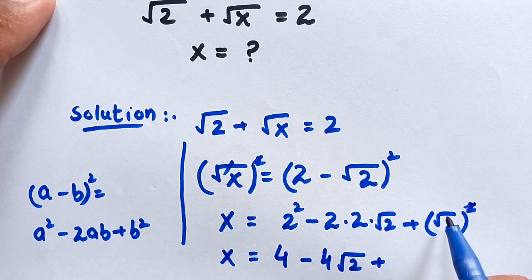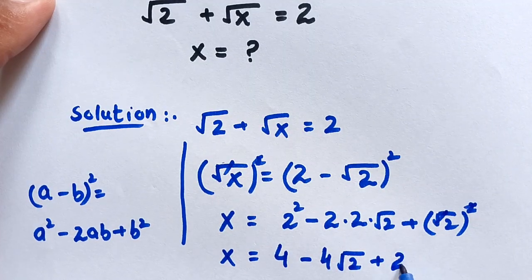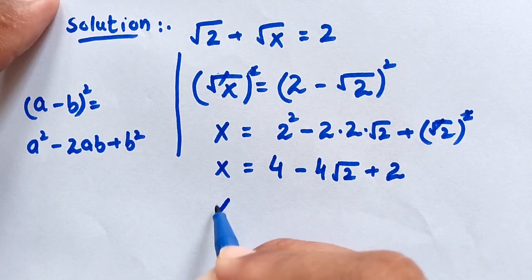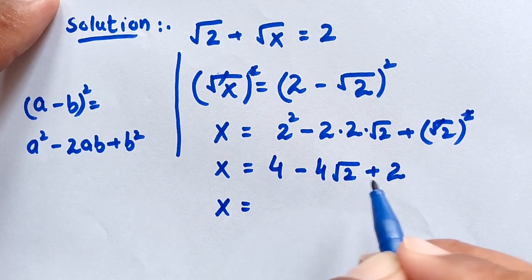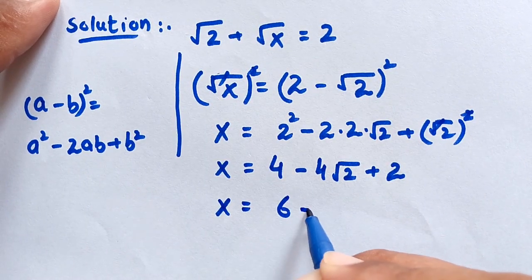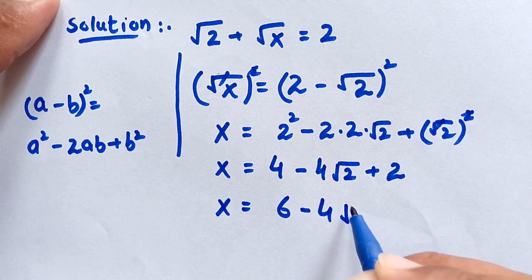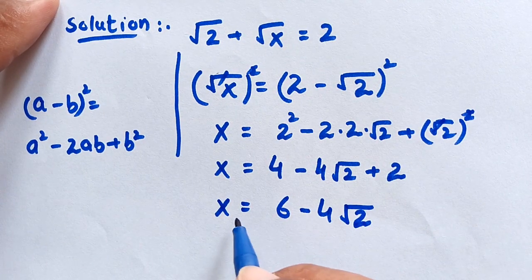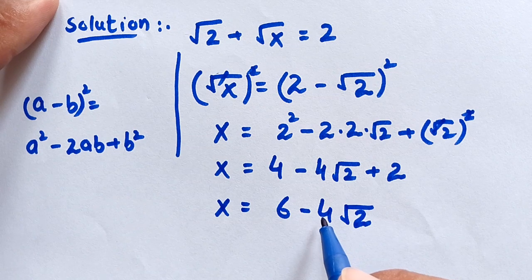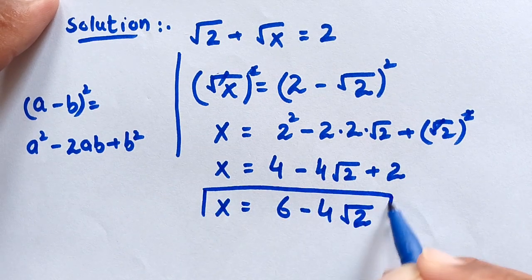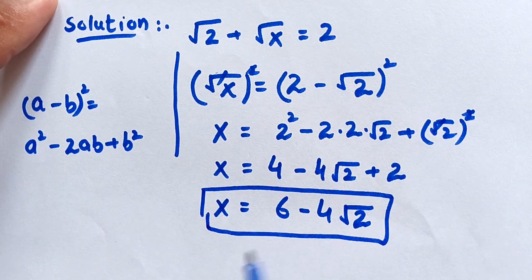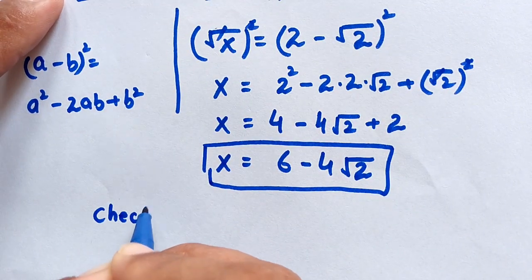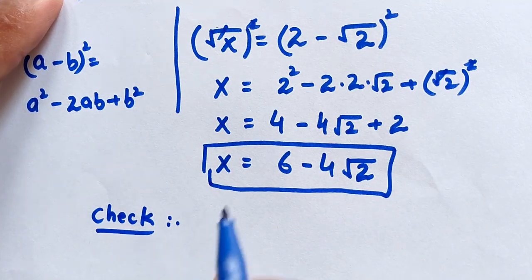...plus this square cancels with this square root, giving us 2. So in the next step, x equals 4 plus 2 minus 4 times square root of 2, which equals 6 minus 4 times square root of 2. This is the value of x and the answer to this question.